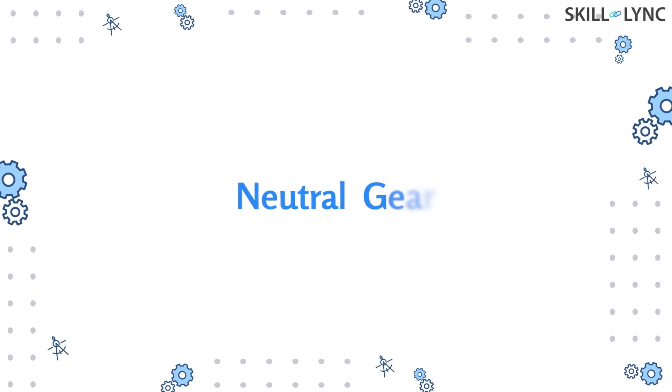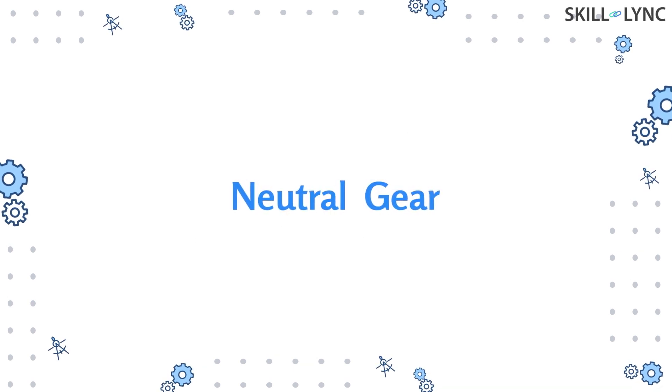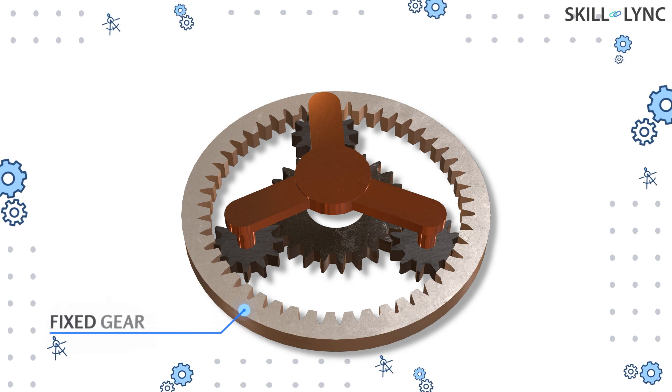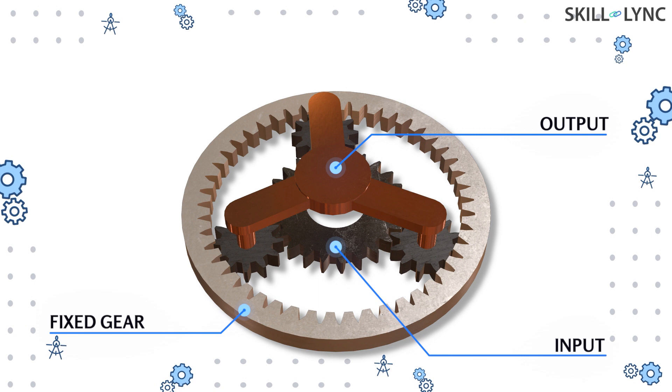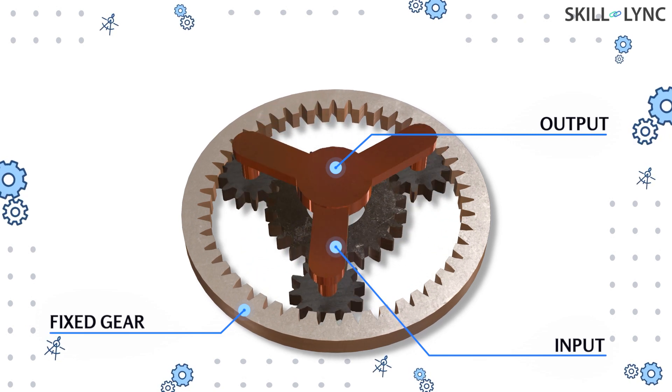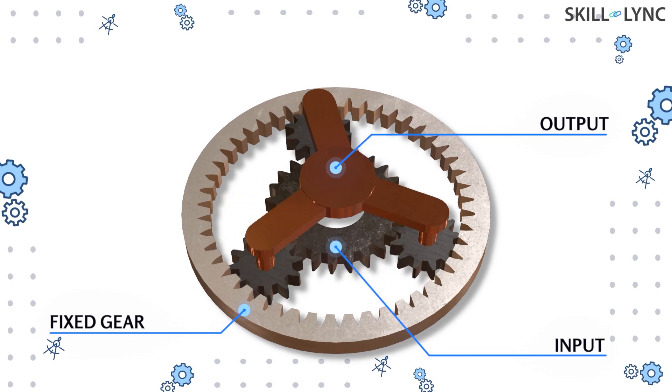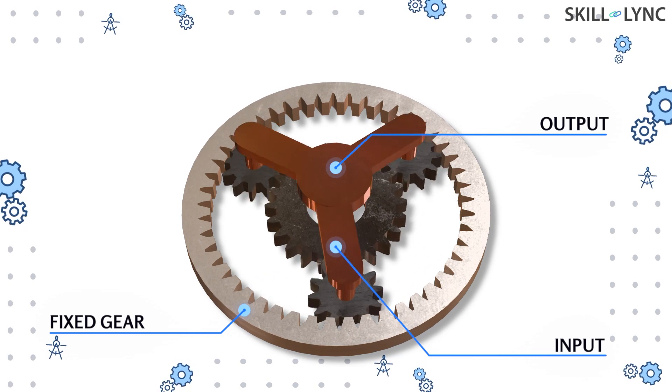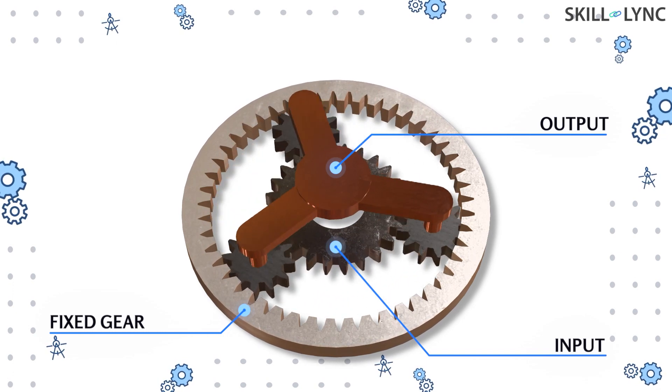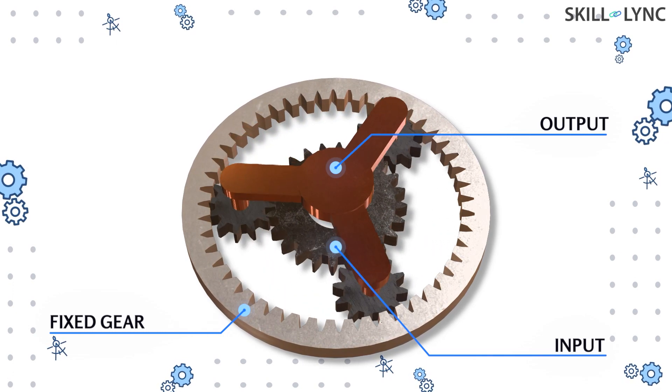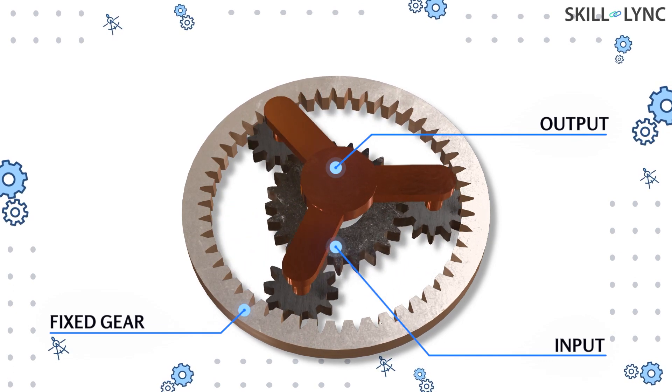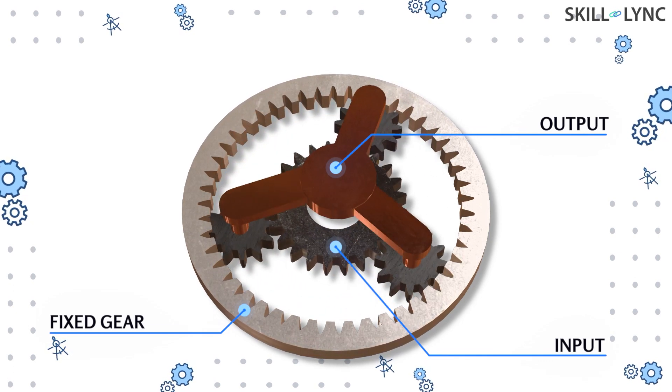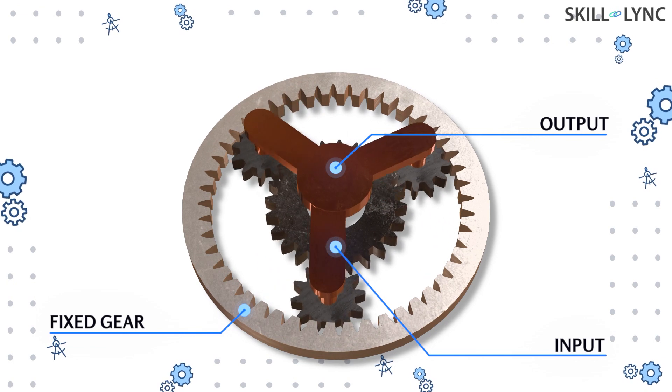Now let's fix the ring gear and let the sun gear and the carriage be the driving and driven members respectively. When the sun gear rotates it meshes with the planetary gears, making it spin in the opposite direction. As the ring is held fixed, the planet gear rotates over it. Now we can clearly say that the sun gear should rotate a number of turns for making the carrier rotate once. This stage gives us the highest speed reduction rate.